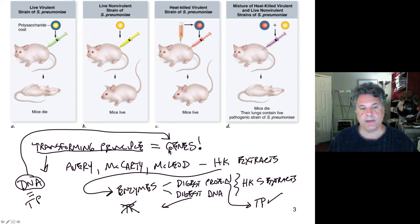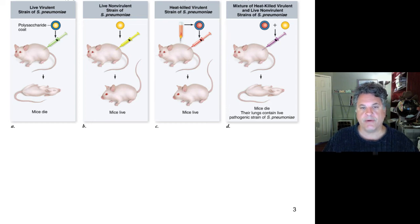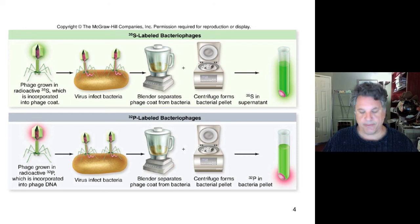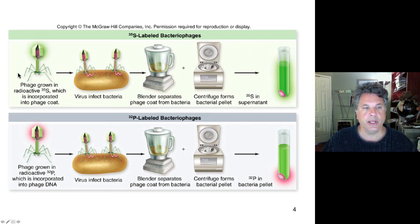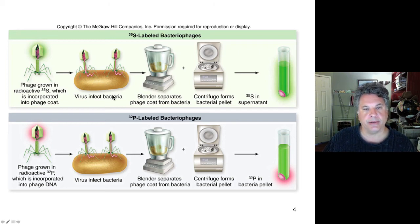Despite these elegant experiments showing DNA caused genetic transformation, the notion that DNA was the genetic material wasn't fully accepted until experimenters working with bacteriophage — bacterial viruses — showed the same features held true in these organisms. Bacteriophage, or phage for short, comes from the Greek meaning 'to eat,' so bacteriophage are eaters of bacteria. They are bacterial viruses that bind to bacteria, inject their genetic material — whatever that is — and mount an infection inside the bacteria, producing more progeny viruses, which are then released.